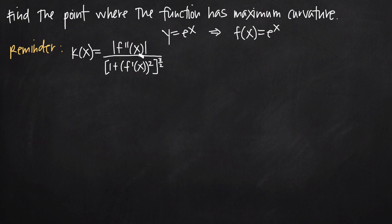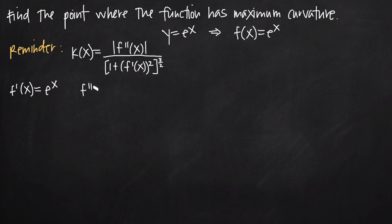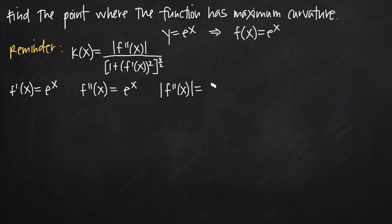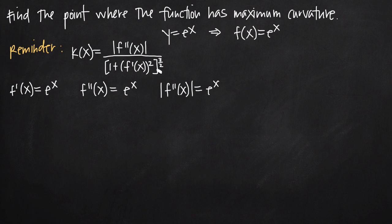Taking the first derivative of f of x, of course the derivative of e to the x is just e to the x, so that's our first derivative. Our second derivative is the same — we still get e to the x. Taking the absolute value of our second derivative still just gives us e to the x, because there's no negative involved. The graph of e to the x is all positive above the x-axis, so taking absolute value doesn't change that at all.